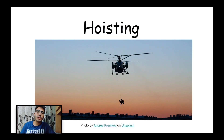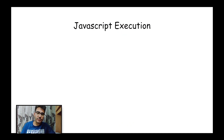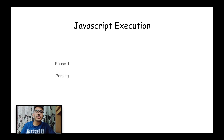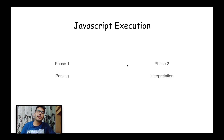Hoisting means lifting something up. You might be wondering how JavaScript is related to hoisting. Your answer is JavaScript execution. JavaScript executes a program in two phases. Phase 1 is parsing, where hoisting comes in. And phase 2 is interpretation, where the JavaScript engine executes the parsed program line by line. I will explain this with the help of a few examples.